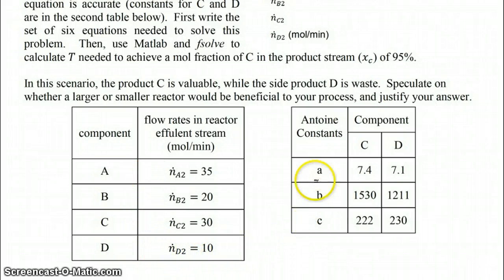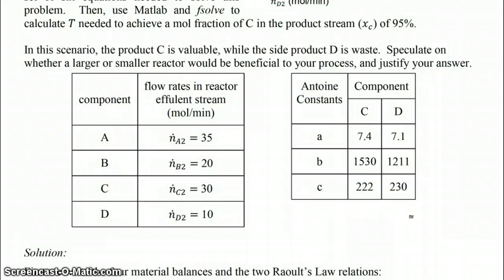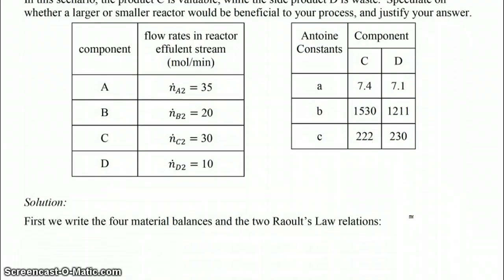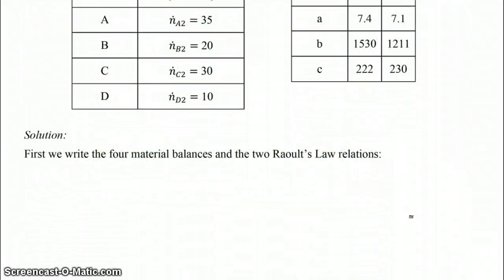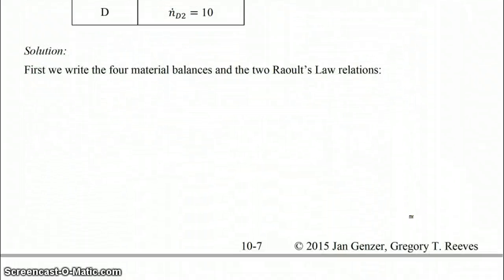Here are the Antoine constants for C and D. To solve this, the first thing we're going to do is write our four material balances and the two Raoult's Law relations. Since we're going to use fsolve, and we want the equations to be of a form where zero is on one side, we're going to write our four material balances as N_in minus N_out equals zero.